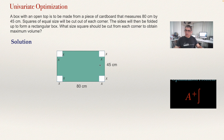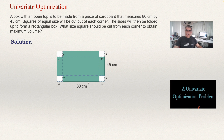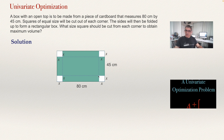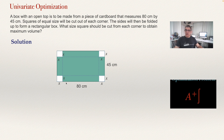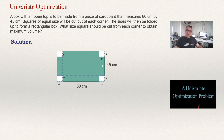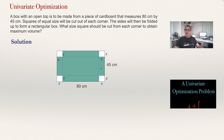We are going to fold the cardboard this way, and this is going to be one of the sides of the box. Then fold here and fold all the other parts. After you fold, you are going to have a box that has 80 centimeters minus 2x as the length, and the width of the box will be 45 minus 2x.